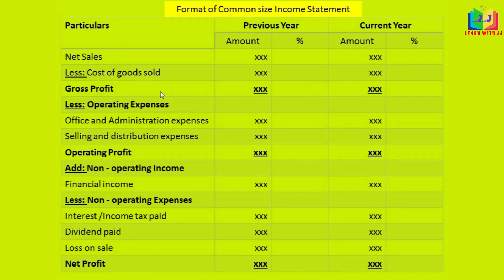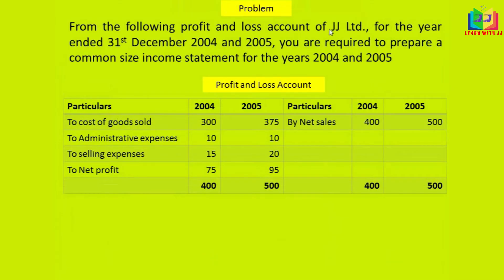We have the cost of goods sold, then gross profit, then operating expenses, then non-operating income — for example, profit on sale or interest received, which are not from core business operations. Non-operating expenses such as interest paid, dividend paid, or loss on sale are deducted to arrive at net profit. Now, from the following profit and loss account of JJ Limited for the years ended 31 December 2004 and 2005, we are required to prepare a common-size income statement.